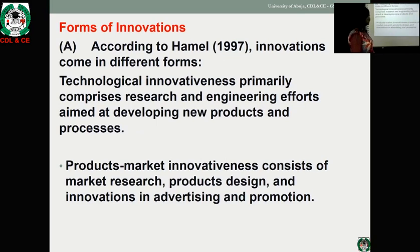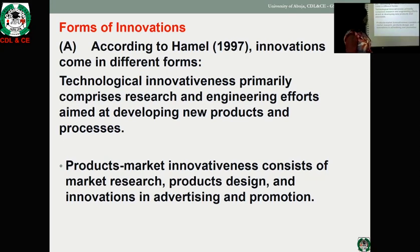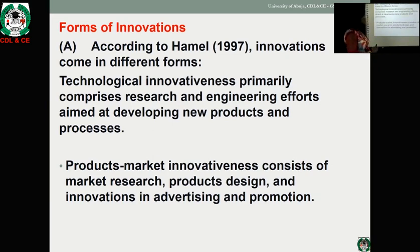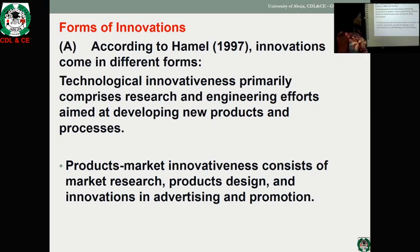Forms of innovation. According to Hamel in 1997, innovation comes in different forms. The first is technological innovativeness, which primarily comprises research and engineering efforts aimed at developing new products and processes. Another form is product market innovativeness, which consists of market research, product design, and innovation in advertising and promotion.